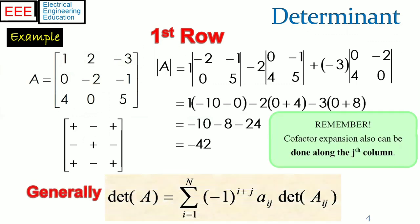Generally, the determinant of an n by n matrix is obtained in terms of the determinants of the n, n minus 1 by n minus 1 matrices as shown, where the matrix A sub i j is an n minus 1 by n minus 1 matrix formed by deleting the i-th row and j-th column of A.